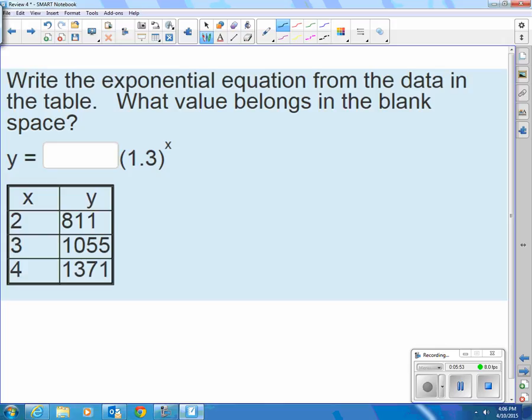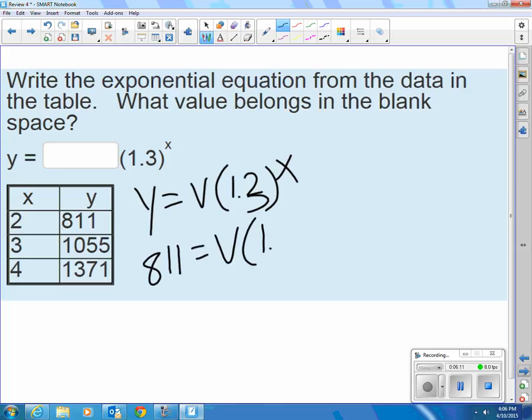Solving this exponential equation for the starting value. So we'll say y equals some starting value times 1.3 raised to the x. When y is 811, then x is 2. So I just chose that pair. It doesn't matter which pair you choose. But they have to go together.